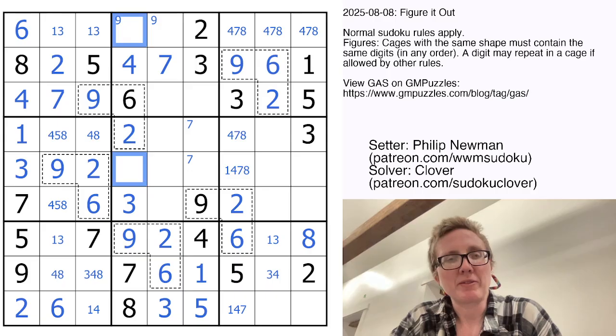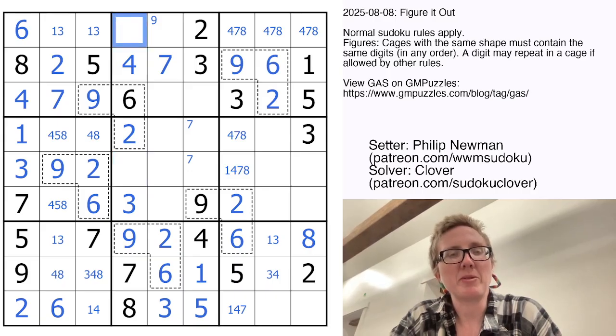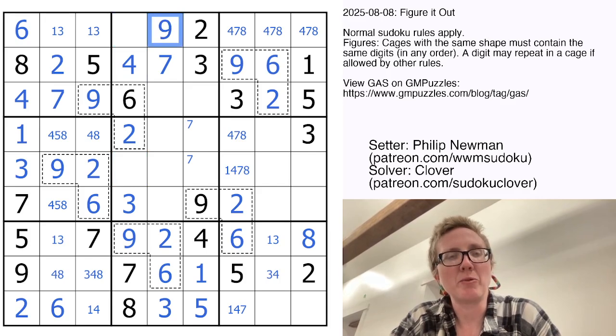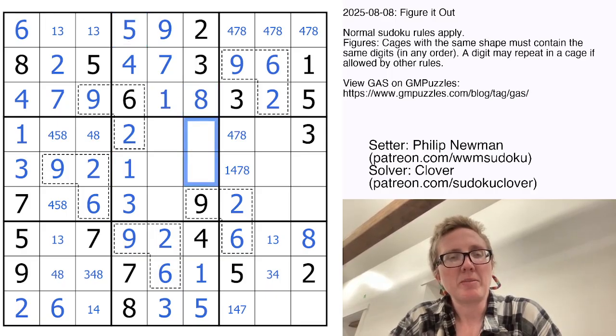3 now must go in this cell in region 5. That's the only position left for 3. So this can no longer be a 9 because we do have a 9 in column 4. So that's going to be a 9. It'll be a 5 to finish off the row. That makes this a 1. Then these are going to be 1 and 8 to finish the region.